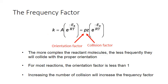You can counteract a lower orientation factor by increasing the number of collisions — increasing your collision factor. There are several ways to increase the number of collisions overall. One way is to change the state: gaseous reactions and reactions in solutions are generally faster because it's easier for the molecules to mix and to collide more frequently. Mixing your reactants well increases rates because it increases the frequency of collisions. An increase in the surface area of solid reactants can also help increase the frequency of collisions.